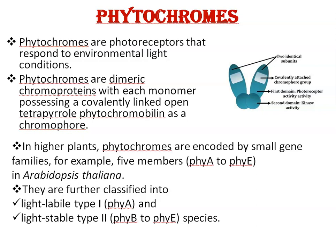Phytochromes are photoreceptors that respond to environmental light conditions and control a variety of photomorphogenic responses. Phytochromes are dimeric chromoproteins, as you can see here in this diagram, having two subunits. Each monomer possesses a covalently linked open tetrapyrrole phytochromobilin as a chromophore. As you can see in this diagram, these are two identical subunits with a covalently attached chromophore group.